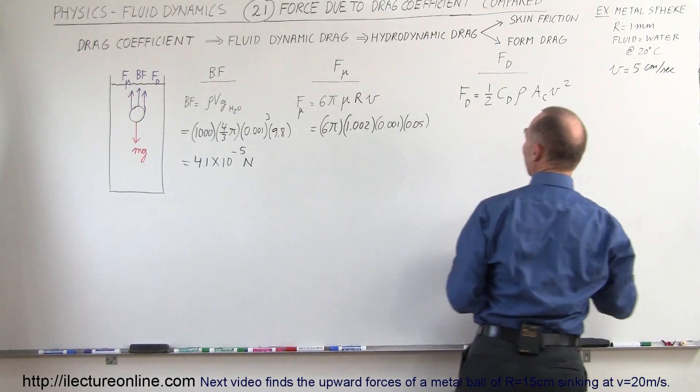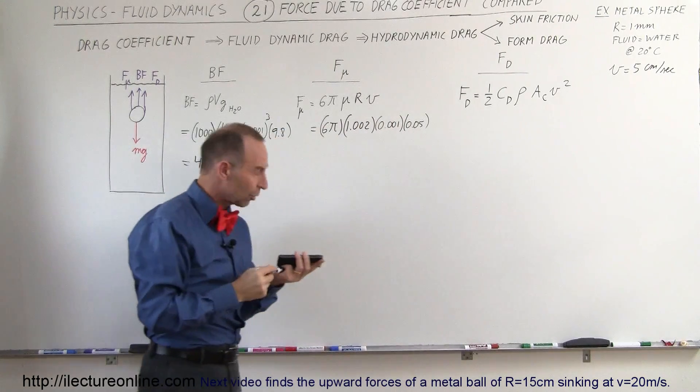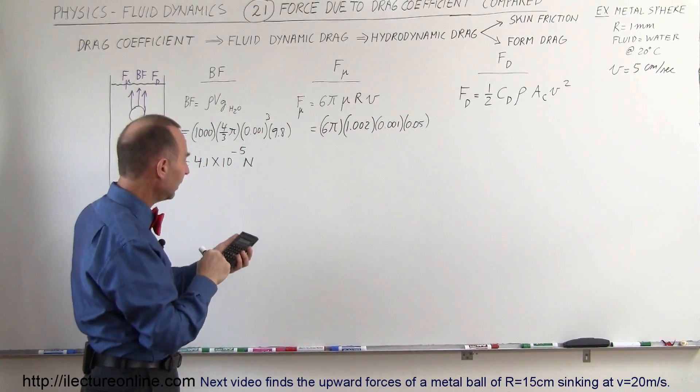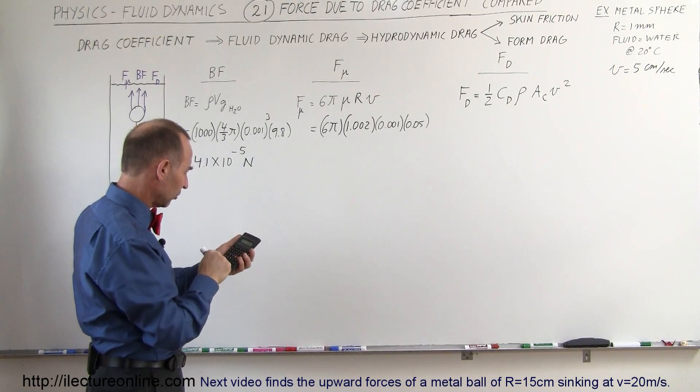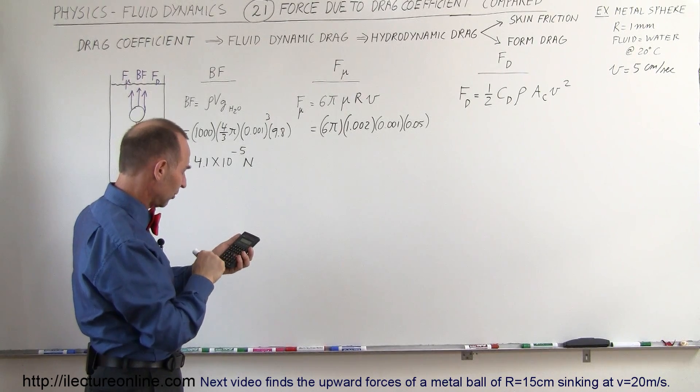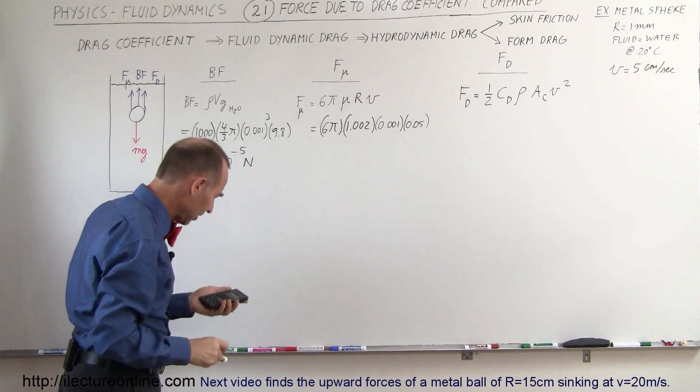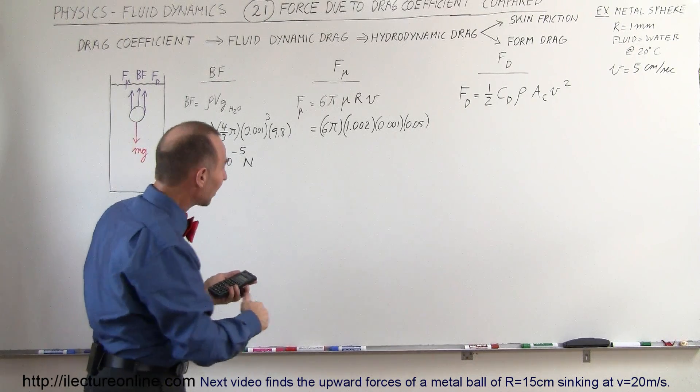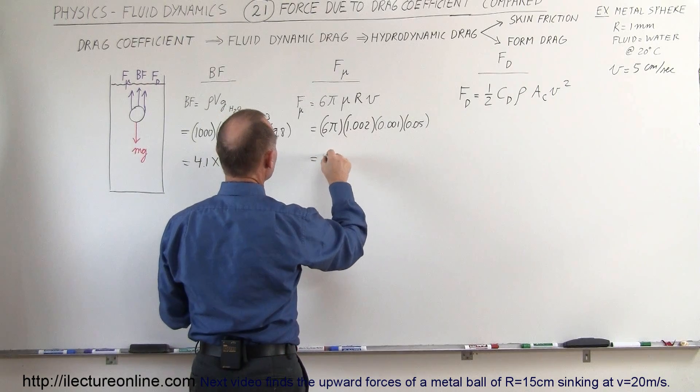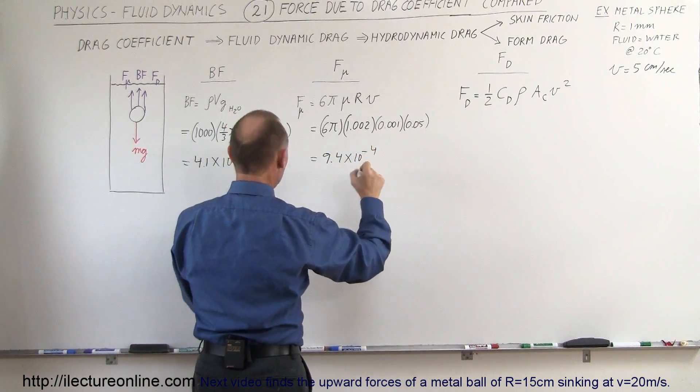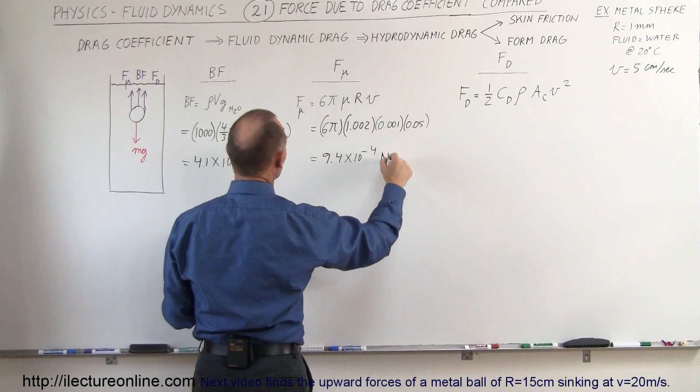Plugging that into the equation, we get 6 times π times 1.002 times 0.001 times 0.05 equals, and so that would be 9.4 times 10 to the minus 4. That would be 9.4 times 10 to the minus 4 Newtons.